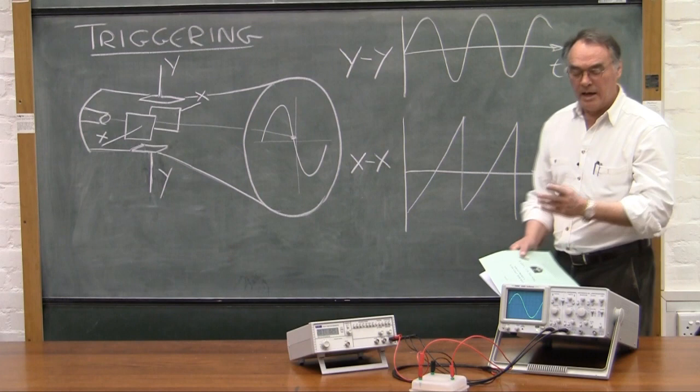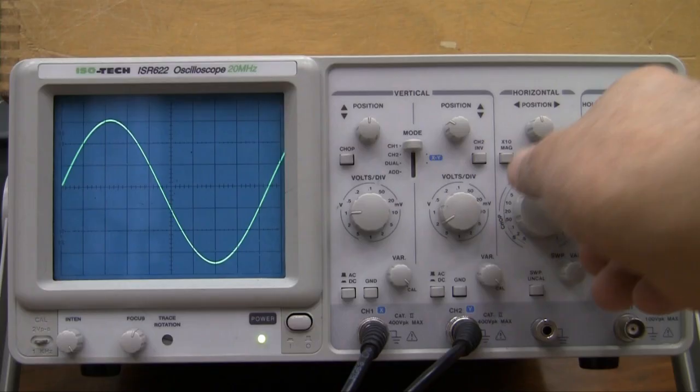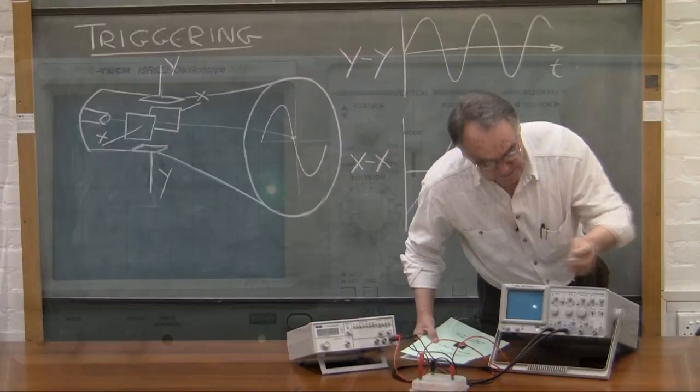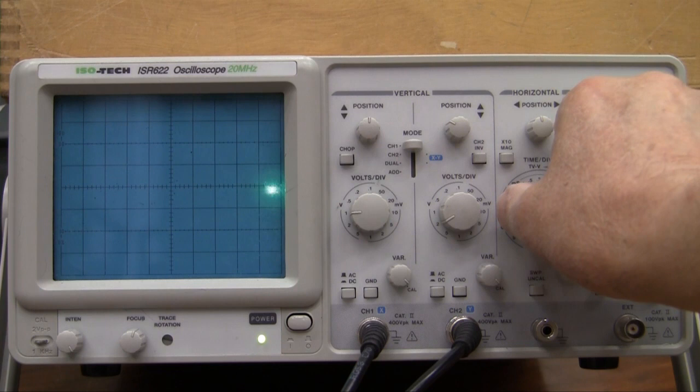And we can see that by setting the... And there you can see on the X plates, charging up, flying back, charging up, flying back, charging up, flying back. And as we change the time base to go faster and faster and faster, so eventually it looks as if this thing is just a solid line.